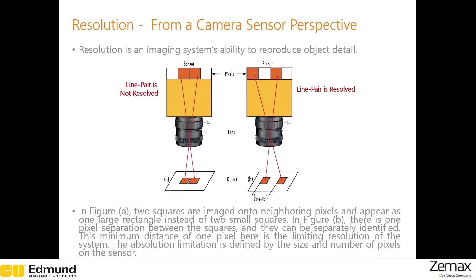From a camera sensor perspective, resolution is limited by the size and number of pixels on the sensor. Here, two squares in the object space cannot be imaged as separate entities on the sensor, but here you can. The minimum distance between the images in this case is one pixel, and it is the limiting resolution of the system.